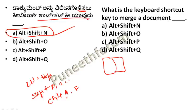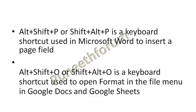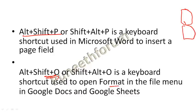If you use ALT+SHIFT+N, you can merge both documents. If you use O and P, you can use a page insert. If you use a page insert, you can insert the same page. If you use O, you can use the format in Google Documents Sheets, so you can use the most details.